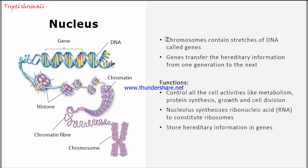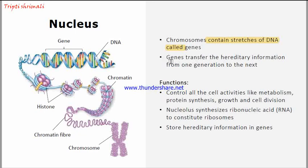If we look at the structure of DNA, it has a double helical structure. The chromosomes contain stretches of DNA called genes. Genes are the hereditary unit — the functional segments of DNA are called genes. Genes transfer the hereditary information from one generation to the next, which is why they are termed hereditary units.